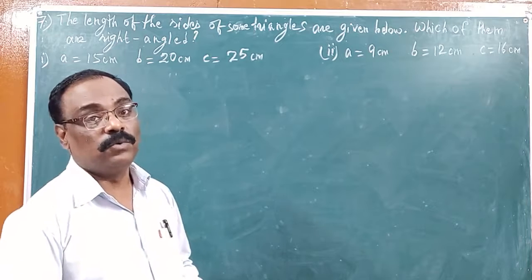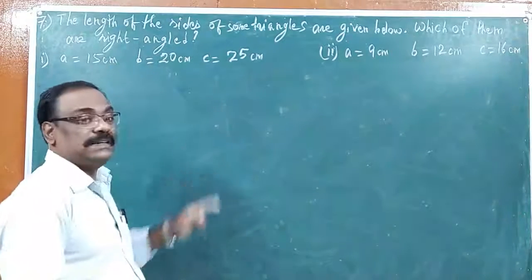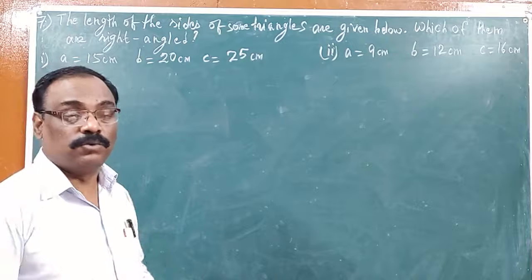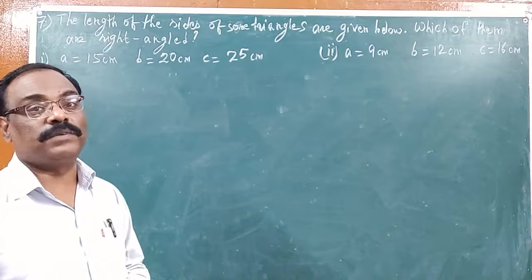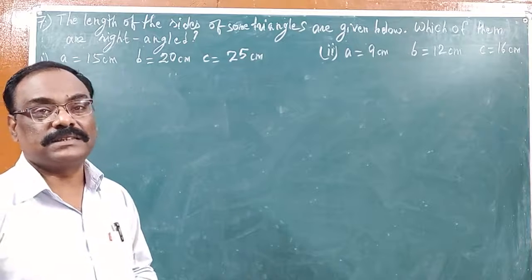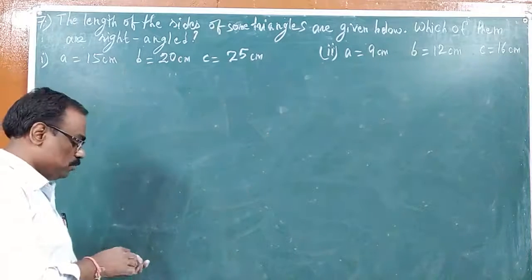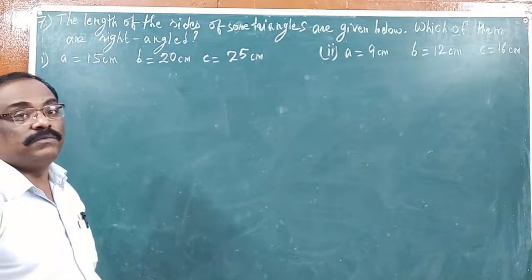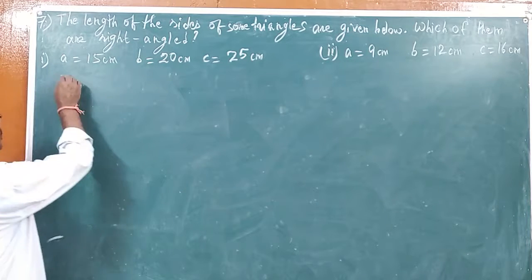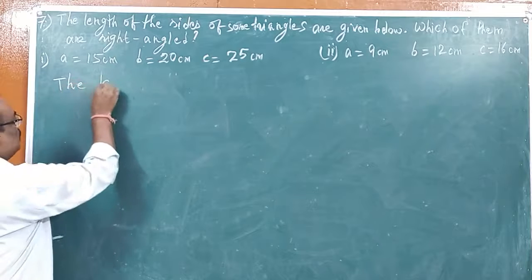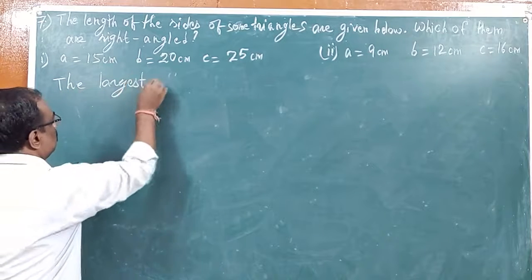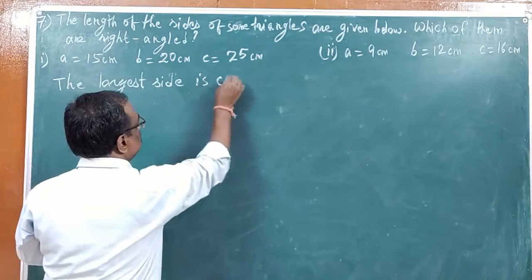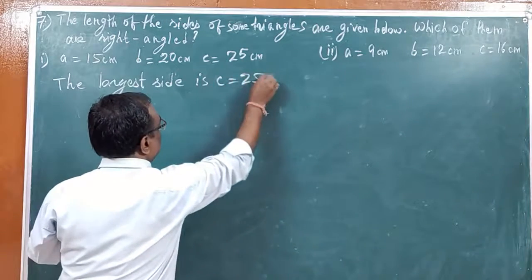Now here, we need to prove whether with these sides, that triangle is a right angle or not. For solving this, first of all, you need to find which is the largest side. When we take question number 1, we can see that the largest side among the three sides is 25. So the first step you should write is: the largest side is C, that is equal to 25 cm.